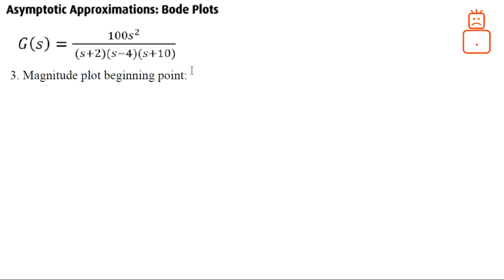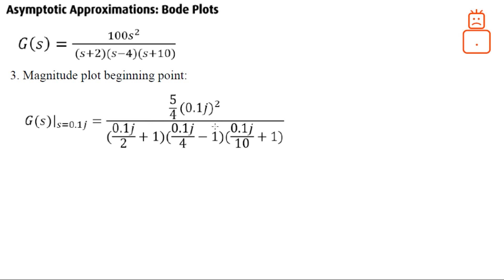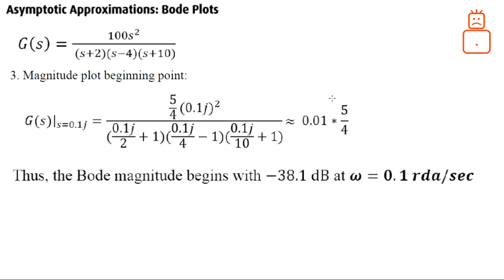The third step is finding the beginning point on the magnitude plot. We take our normalized transfer function and introduce a very small frequency, such as 0.1 or 0.01 rad/s. For the pole terms, you ignore the small frequency value compared to 1. For the zeros, you must compute (0.1j) squared. The final magnitude at frequency 0.1 rad/s gives a starting value; taking 20·log of this value yields minus 38.1 dB — this is the starting point of the magnitude plot.